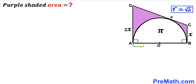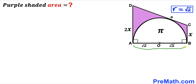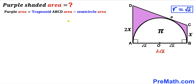That means radius AO = √2 and likewise radius OB = √2. So the full diameter AB equals √2 + √2, which gives us 2√2.